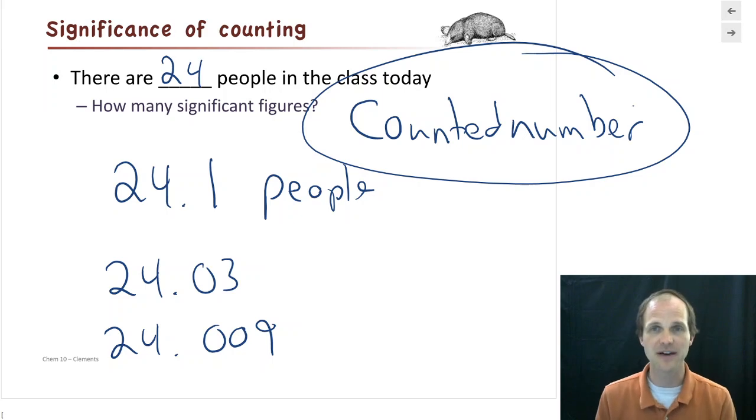But I can't count people better, right? I mean, I either count them right or I count them wrong. If I count them right, if I count that there's 24 people, I'm never going to get a better measurement than that. And those are what we call counted numbers.